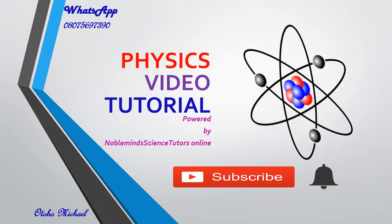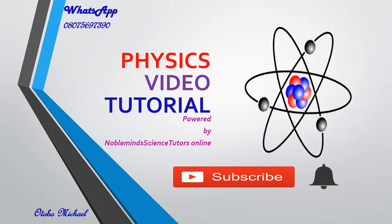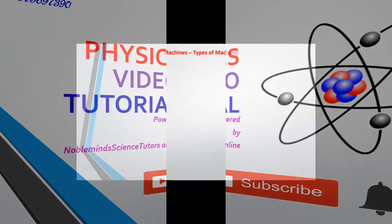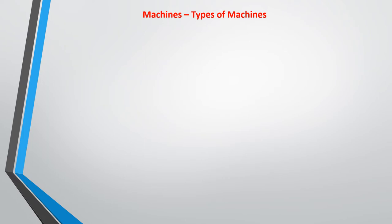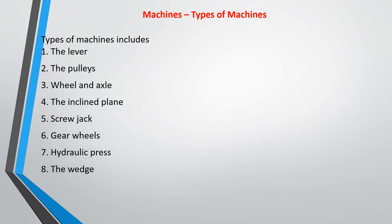Straight to our class — we are looking at types of machines. On a daily basis you come across different types of machines, and each of these is classified differently. We have the lever, the pulley, wheel and axle, the inclined plane, screw jack, gearways, the hydraulic press, and the wedge. These are different types of machines that you use on a daily basis.